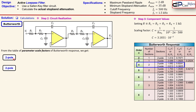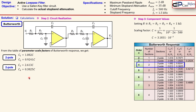For the first two-pole stage: C1 = 1.082 × C and C2 = 0.9241 × C. For the second stage: C3 = 2.613 × C and C4 = 0.3825 × C. These coefficients come directly from the Butterworth fourth-order table.